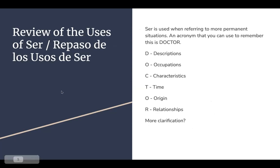We're going to quickly review the uses of ser. Ser is used when referring to more permanent situations — this isn't always the case, but it's a guideline. An acronym you can use is DOCTOR: D stands for descriptions of somebody, such as their physical descriptions or personality; O is for occupations, what they do for a living; C is for characteristics like personality traits and physical descriptions; T is for time, when you're telling time.